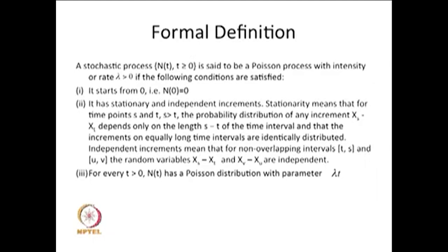For every t > 0, N(t) has a Poisson distribution with parameter λt. For illustration, this has been shown with two increments. The occurrence of arrivals during non-overlapping intervals are independent, and stationarity means it is time-invariant — only the length matters, not the actual time.